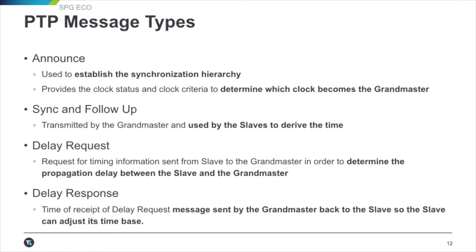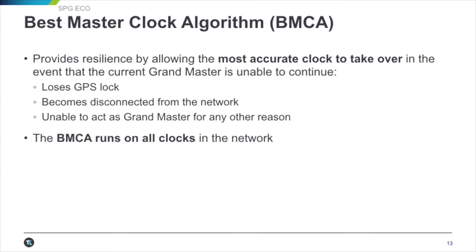Sync and follow-up is how the slaves determine their time from what is being sent from the grandmaster. The delay response is how the grandmaster determines propagation delay between the slave and the grandmaster, then sends back a delay response so the slave can adjust its internal time base. The best master clock algorithm — BMCA — determines which clock is the most accurate and which would be secondary, ready to take over if there's a loss of GPS lock or the grandmaster is unable to perform its duties. The BMCA runs on all clocks within the network because all clocks should be able to step in as grandmaster if needed.